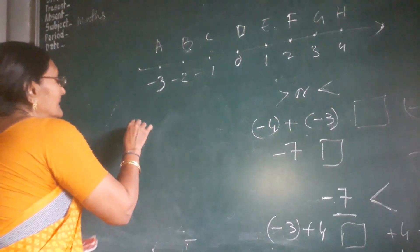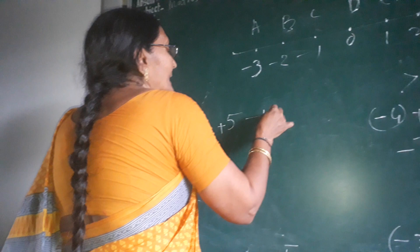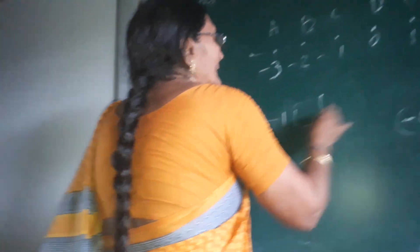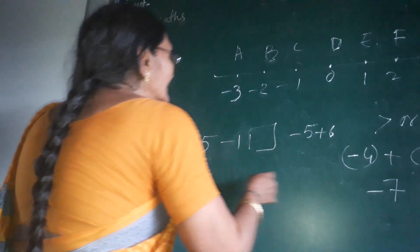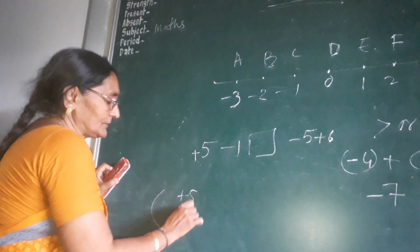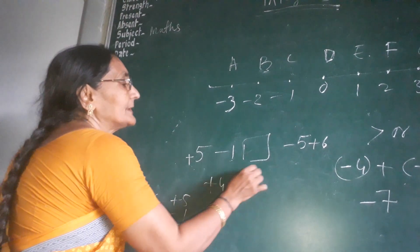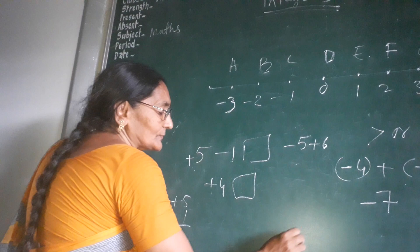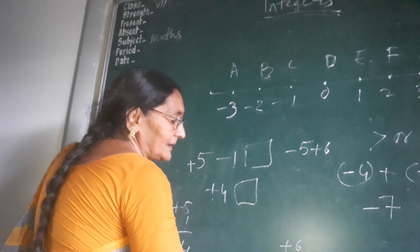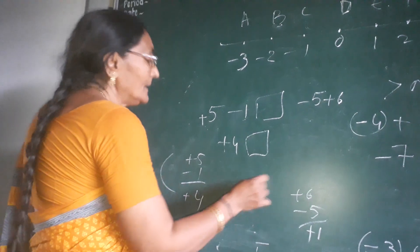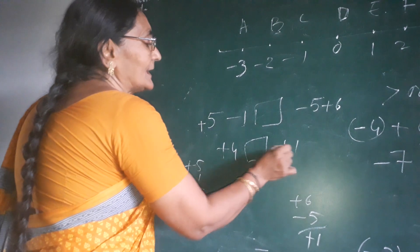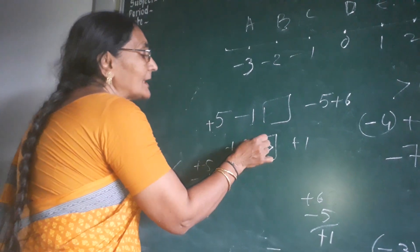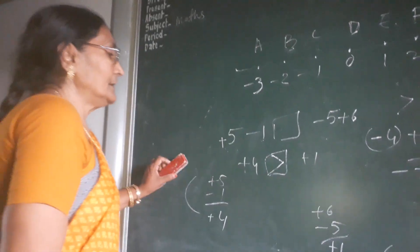If five minus one is there, that gives four. And minus five plus six — six is bigger than five so the answer is plus one. So four is bigger than one — put the greater-than sign. Like this, you find the answer first, then compare which number is greater and which is smaller.